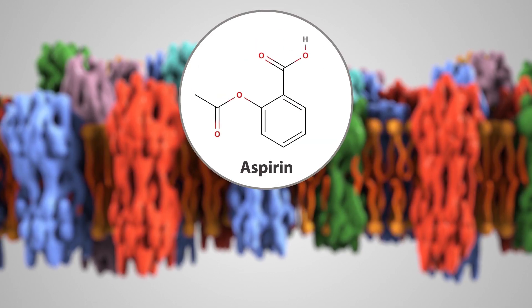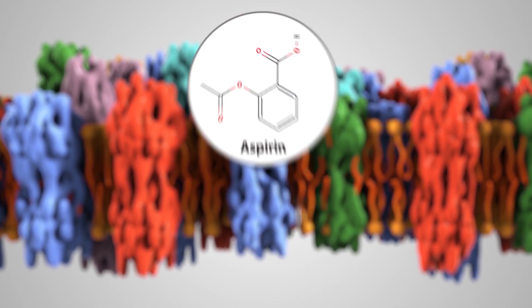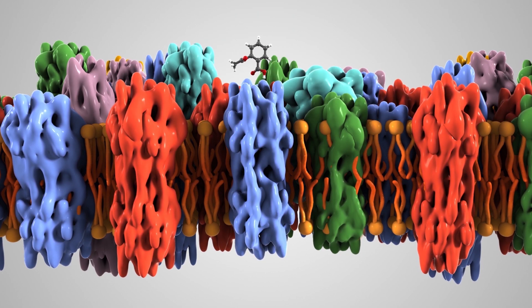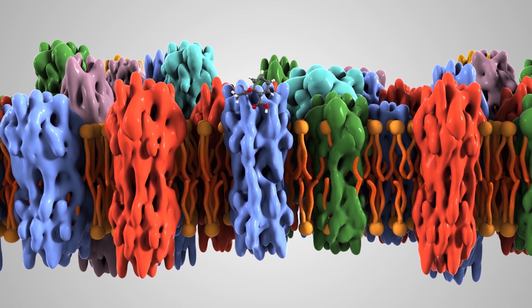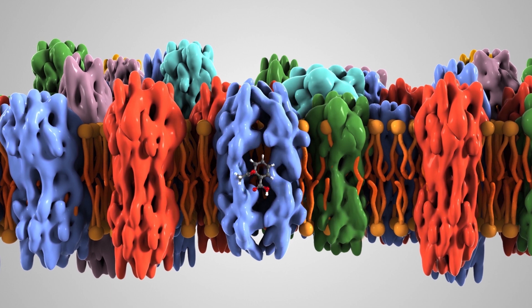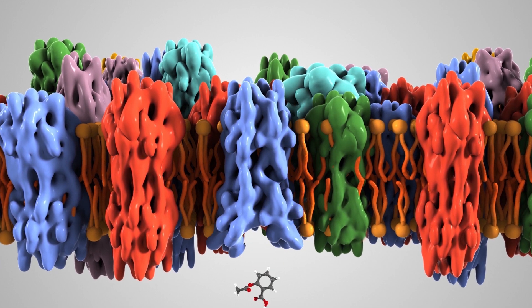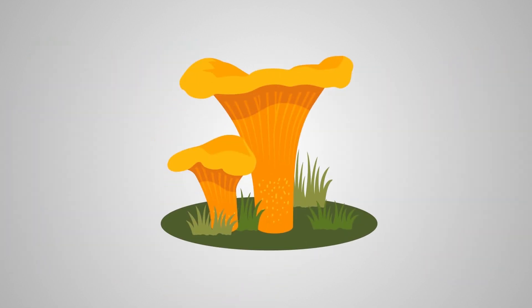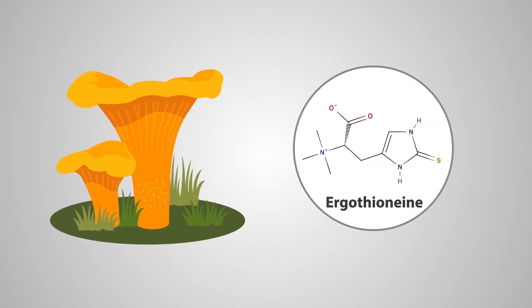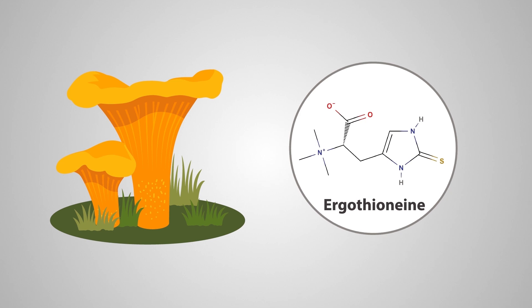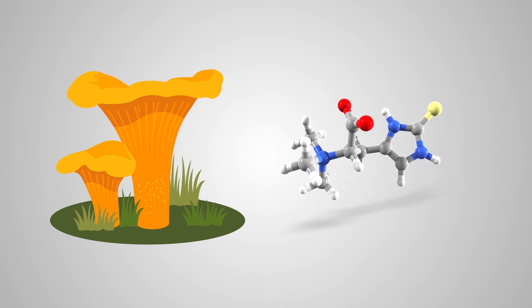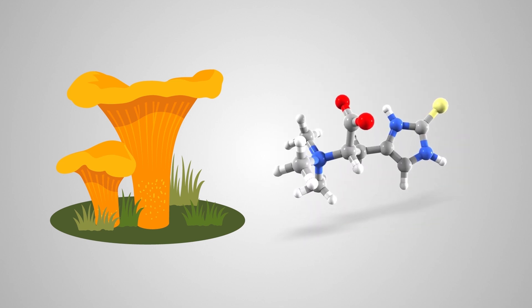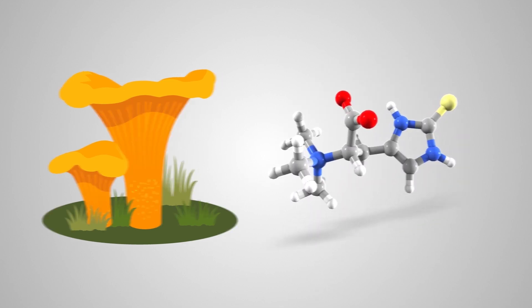Take aspirin, for example. Binding to solute carriers, it is transported into cells. Many transporters have been selected by evolution, like the transporter for ergothionine, a natural antioxidant found in mushrooms.